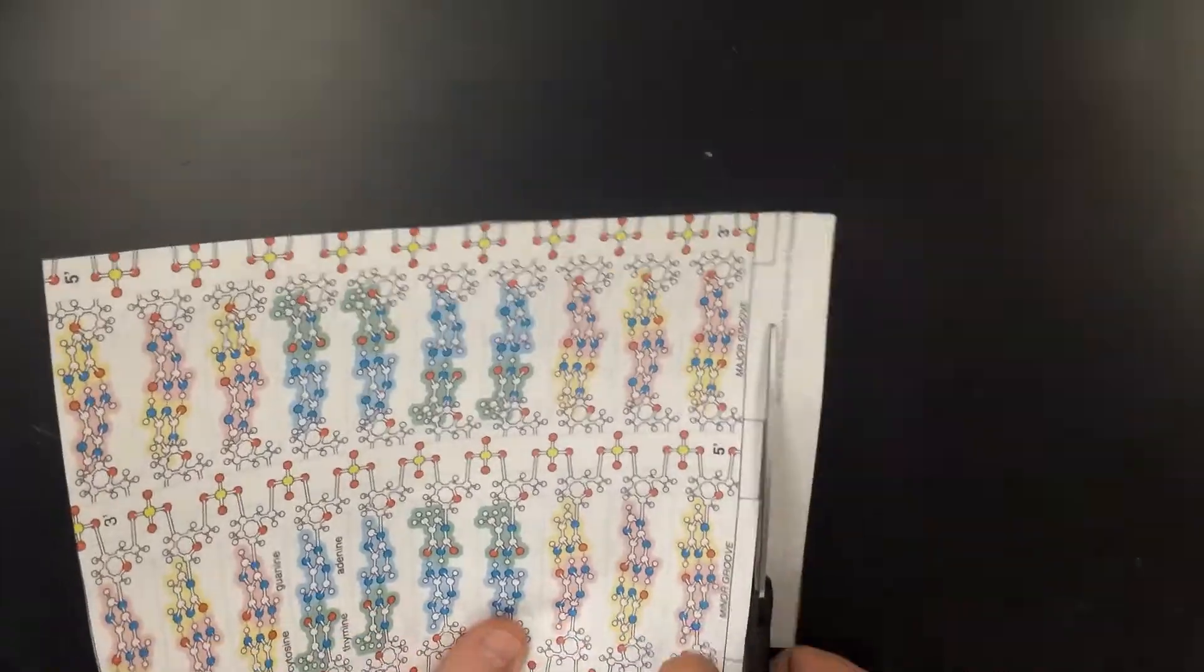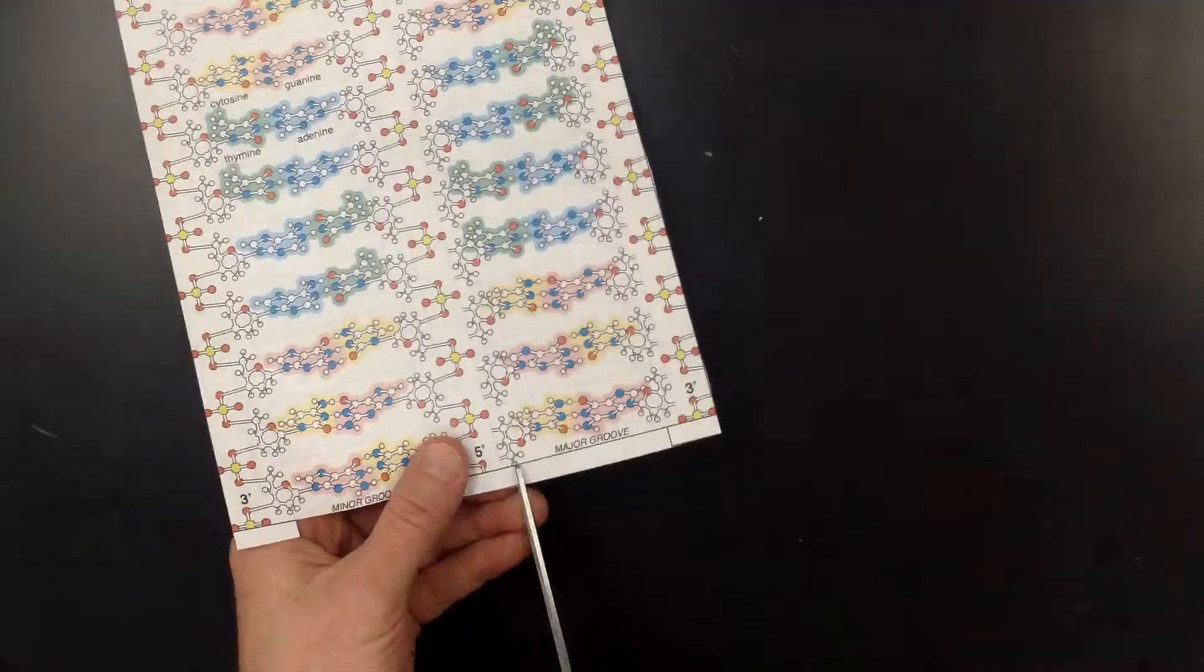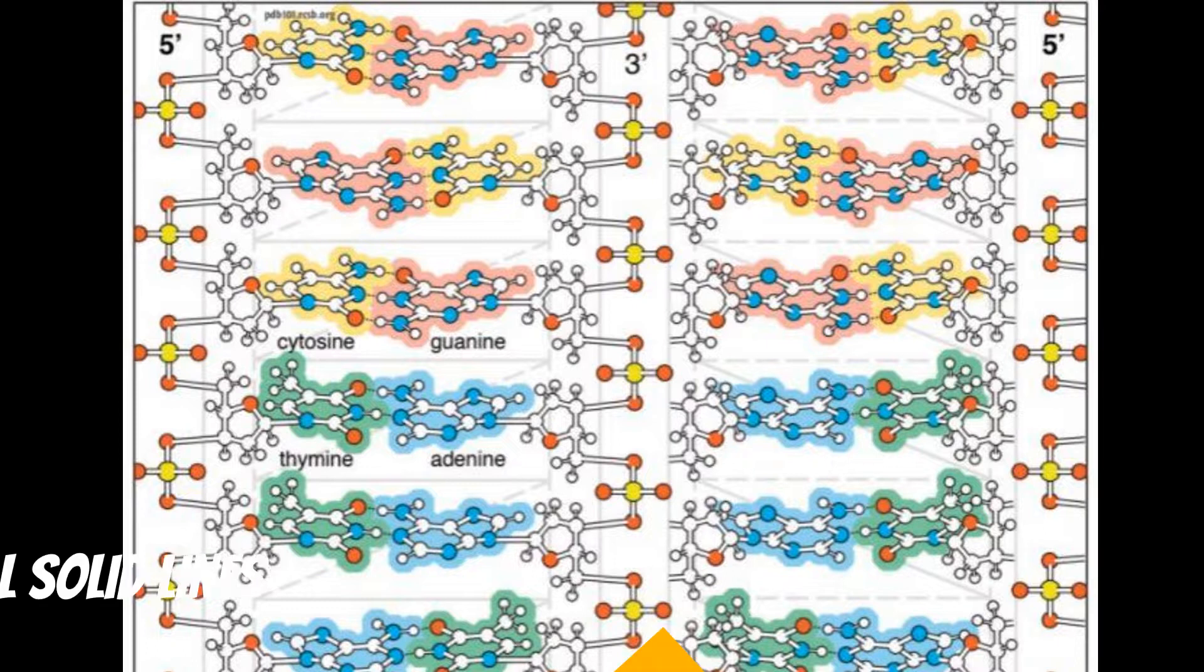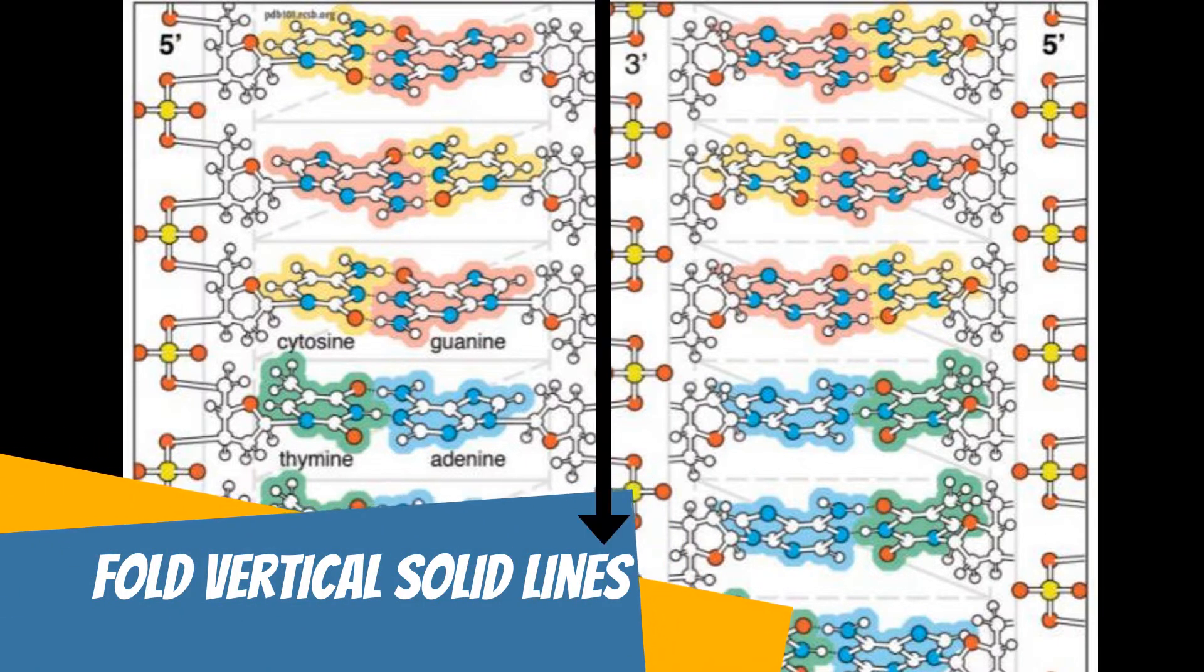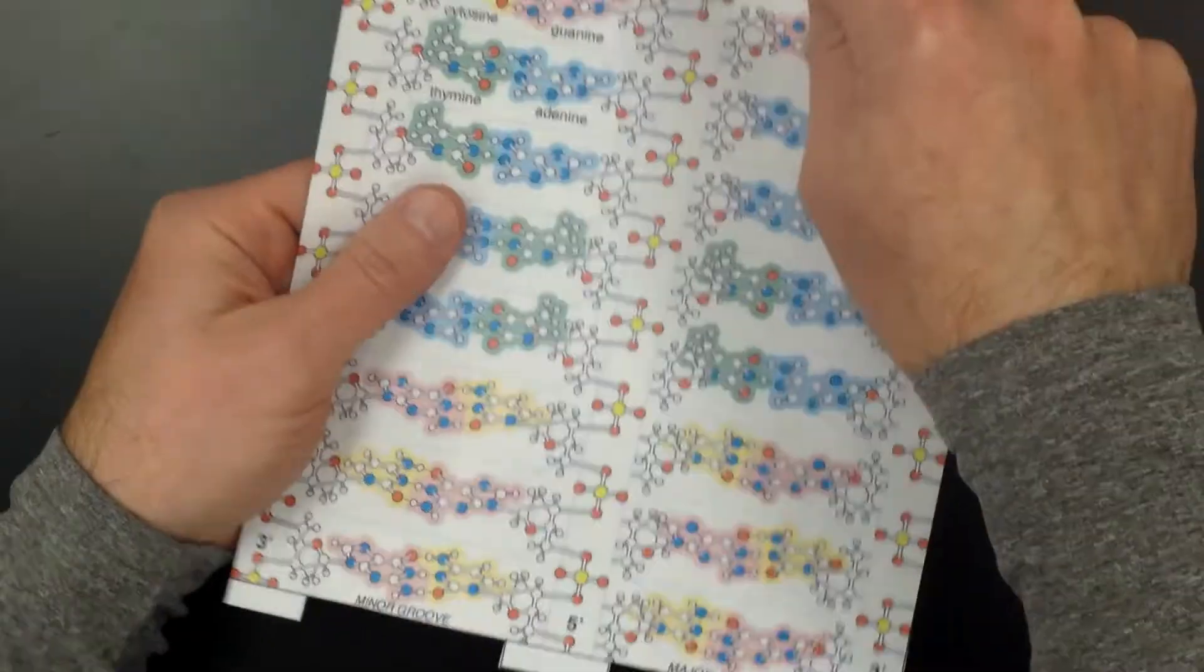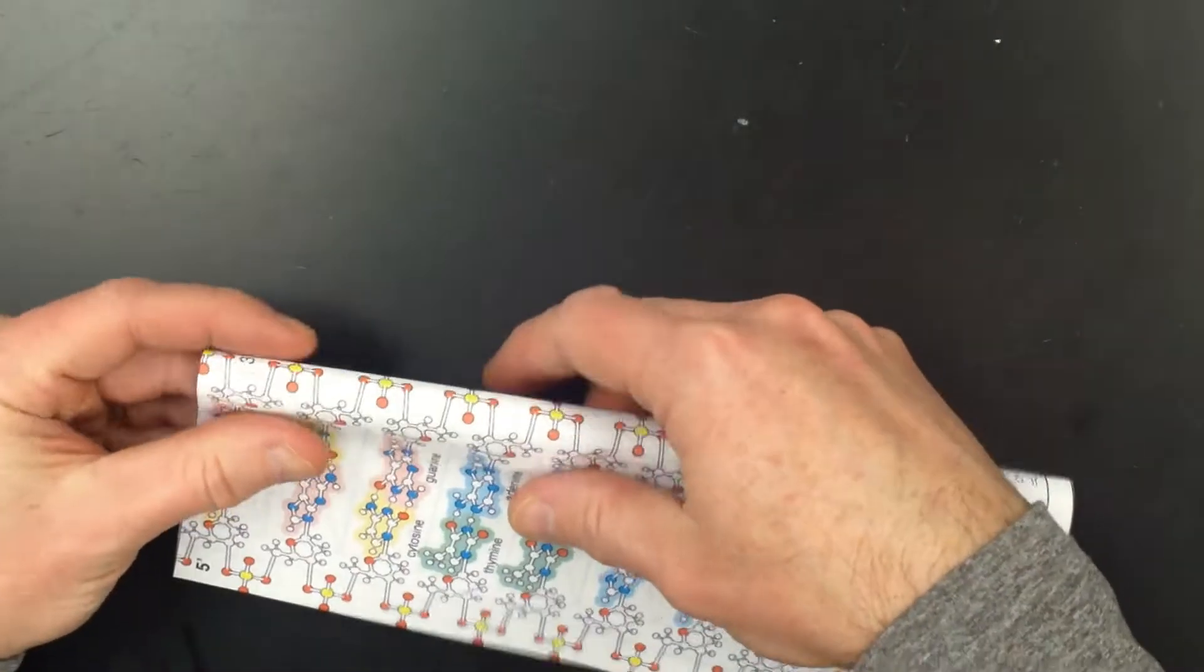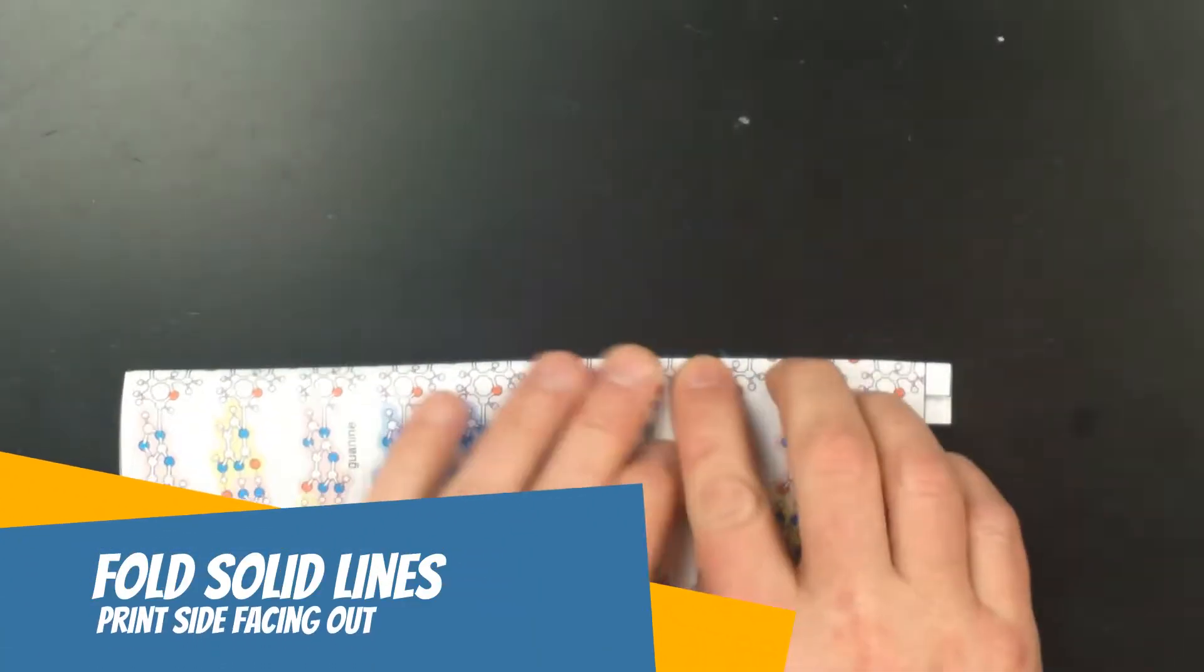Let's start by cutting out the paper model. The next step is to make folds along the long vertical solid lines. These folds should be made so the solid lines are visible along the outside edge of the crease.